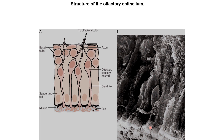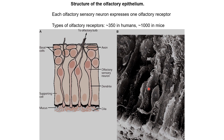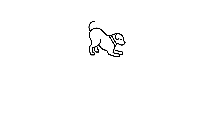Humans have about 350 types of odorant receptors, and mice may have almost a thousand. Dogs have a really good sense of smell — much better than humans. One possible explanation could be the types of receptors present, so maybe dogs have a much larger number of receptors. But because each receptor requires a dedicated gene, if dogs had 10 times more receptors than humans they would also need 10 times more genes for coding these receptors, which probably would not be feasible.